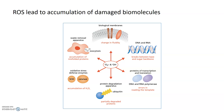ROS leads to the accumulation of damaged biomolecules. Those biomolecules might be the phospholipids that make up biological membranes — when ROS damages them, it can change membrane fluidity. When ROS damages DNA and RNA, it can lead to breaks in the sugar-phosphate backbone. ROS can also damage proteins, and if it affects DNA and RNA polymerase proteins, errors can be introduced into the DNA and RNA molecules made by these enzymes.